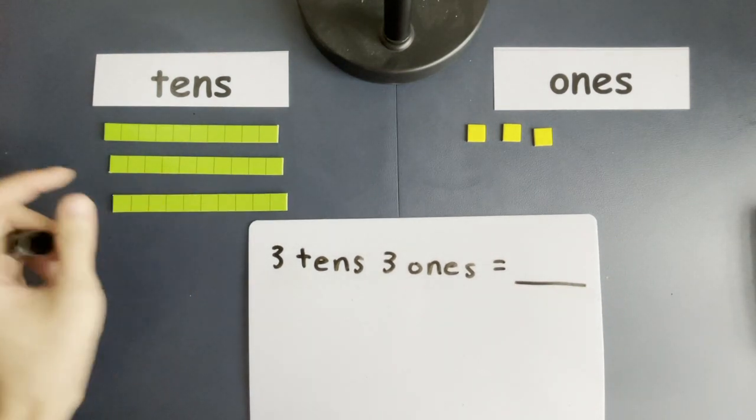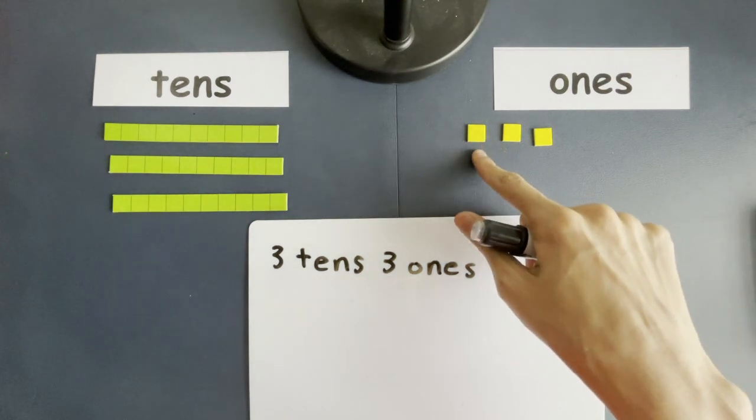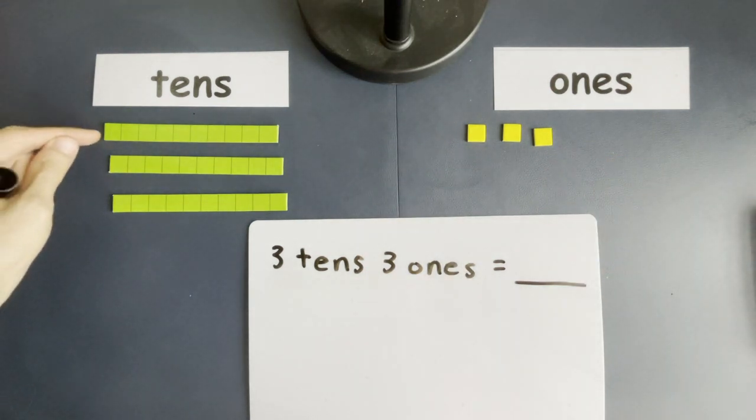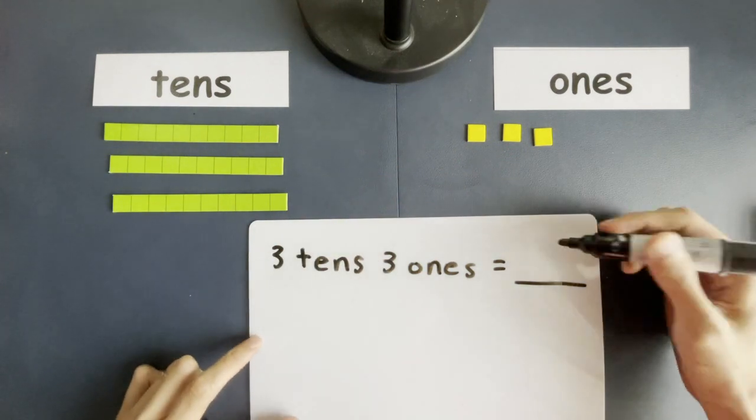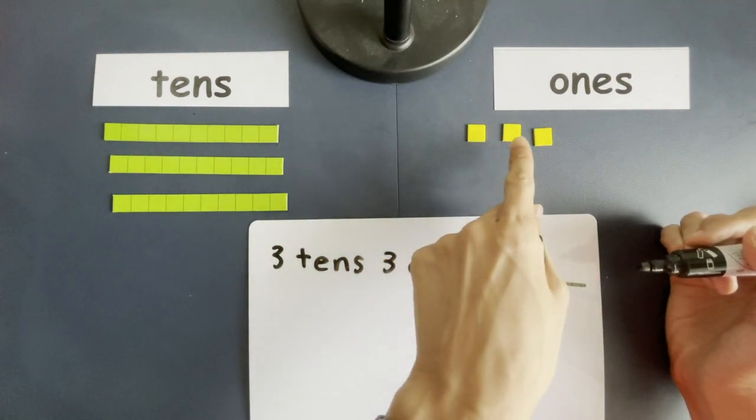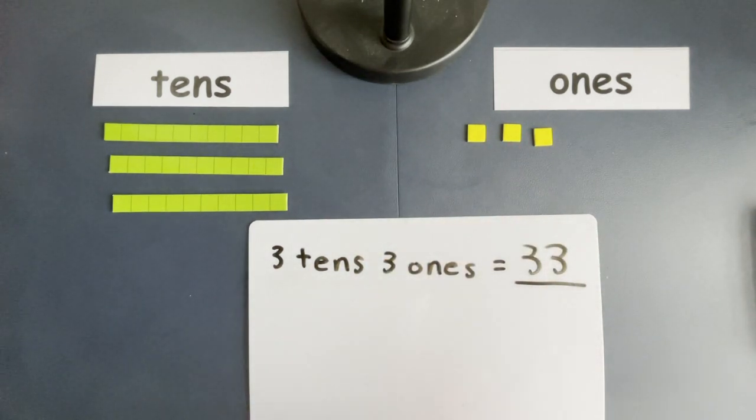Let's count it together. Ten, twenty, thirty, thirty-one, thirty-two, thirty-three. Be careful not to count it like this: ten, twenty, thirty, forty, fifty. The answer is not fifty. The answer is ten, twenty, thirty, thirty-one, thirty-two, and finally, thirty-three. And that is our answer.